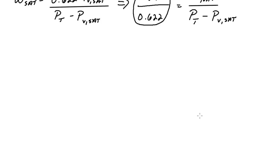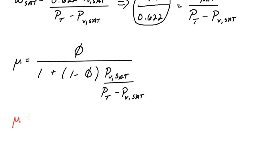If I do that, I'll get mu equals relative humidity over 1 plus 1 minus relative humidity times PV sat over P total minus PV sat. The first step I'm going to do is take this whole bottom of the fraction and multiply it by mu. I'm going to distribute out right away by mu. So I'll get mu from this 1 plus mu times this whole term. I'll get 1 minus phi times PV sat. And that will equal relative humidity.